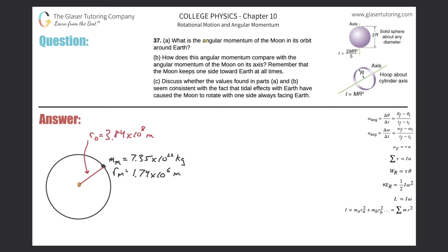Number 37, letter A. What is the angular momentum of the moon in its orbit around the earth?